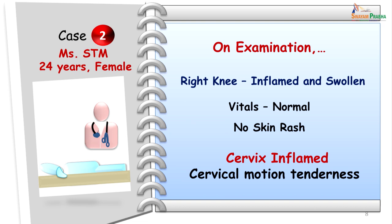On examination of this patient, the right knee was inflamed and swollen, with no skin rash. On pelvic examination the cervix was inflamed, it was red, and is also sometimes described as the mulberry cervix. On examination she experienced pain, which is typically described as cervical motion tenderness. Generalized pelvic tenderness was also observed while examining.